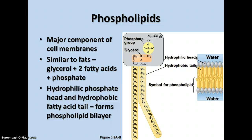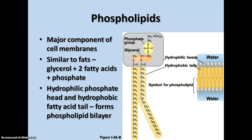Phospholipids are the main part of cell membranes. They are very similar to fats — made of glycerol with two fatty acids — but on the third carbon of the glycerol molecule there's a phosphate group attached. The hydrophilic phosphate end is polar, while the hydrophobic fatty acid tails form what we call a phospholipid bilayer. This double layer is water-compatible on both outer sides but repels water in the middle, which is really important for keeping the cell enclosed in a tight membrane.